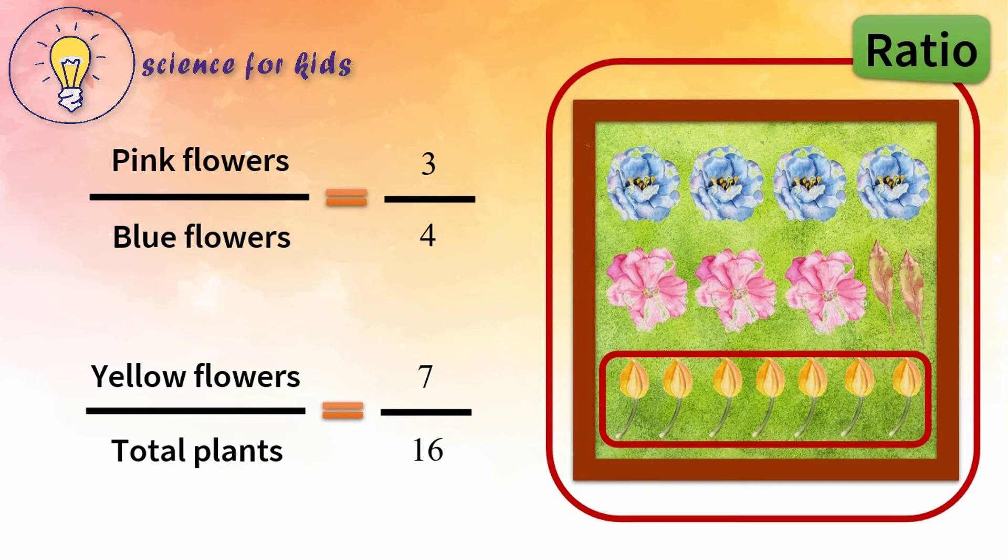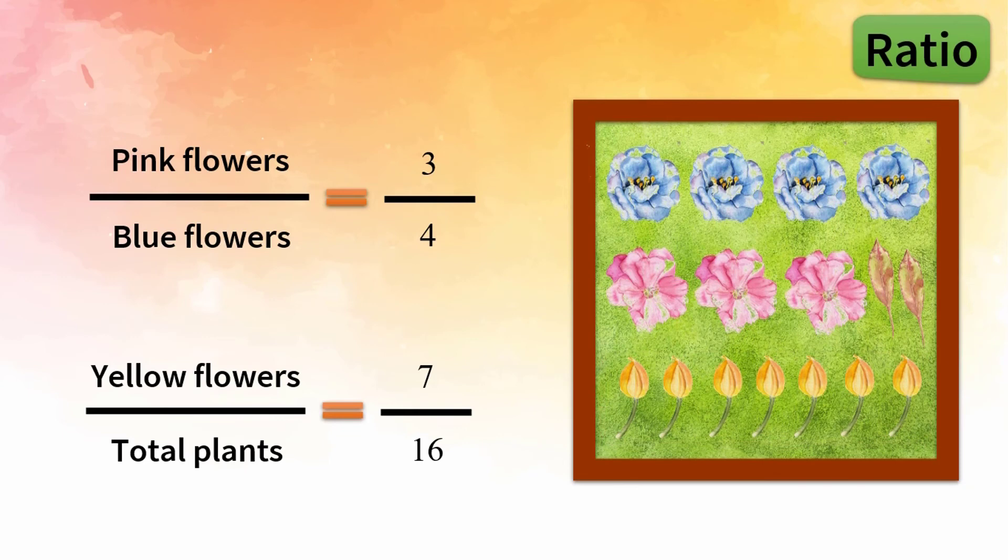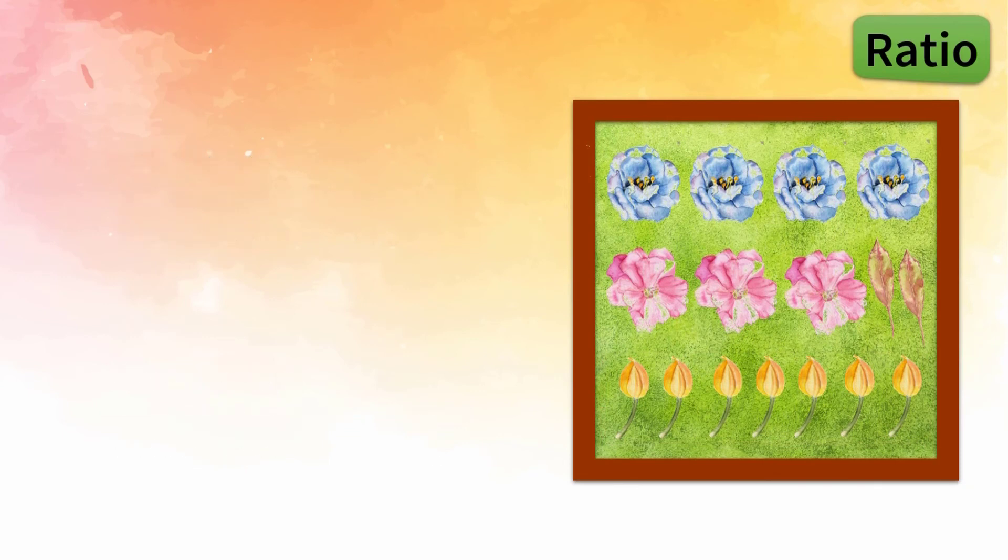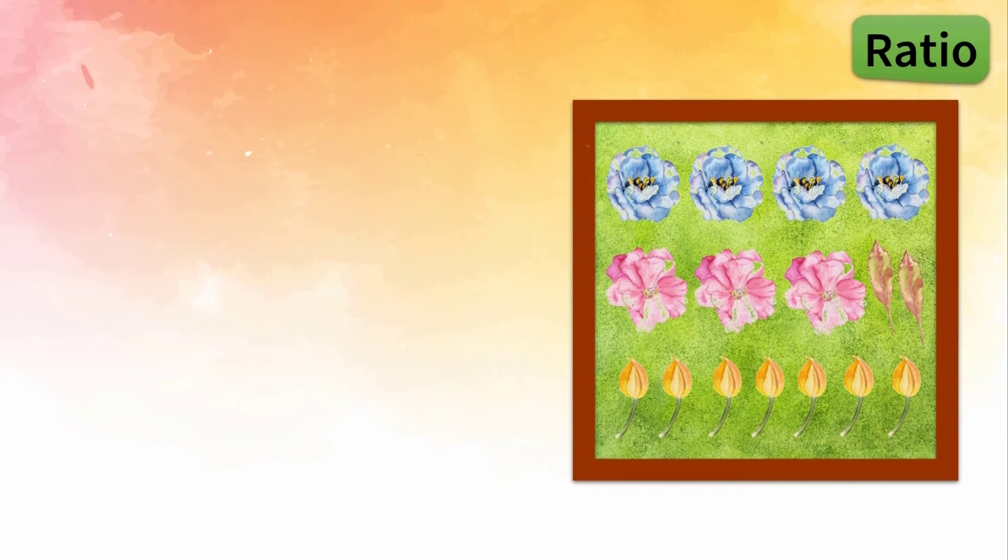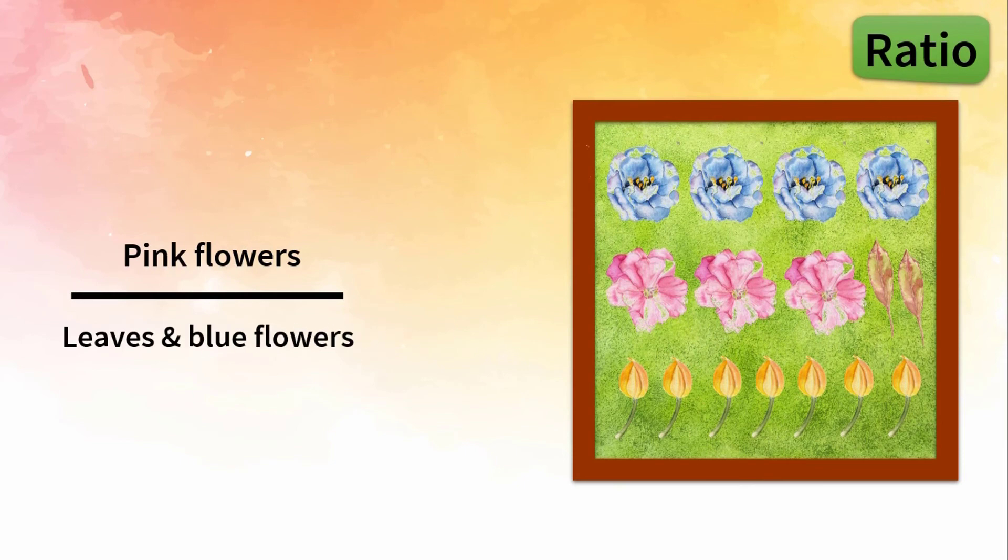You can certainly find another ratio in my garden. As an example, I'd like to know the ratio of pink flowers to leaves and blue flowers. You already know that pink flowers are 3, leaves are 2, and blue flowers are 4. So we write 3 up in front of pink flowers.